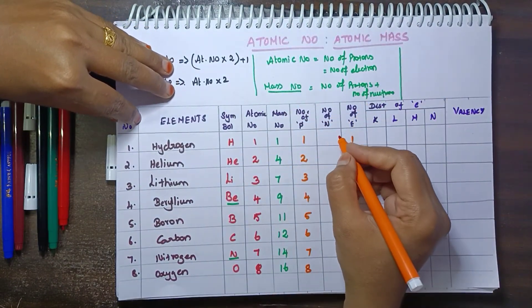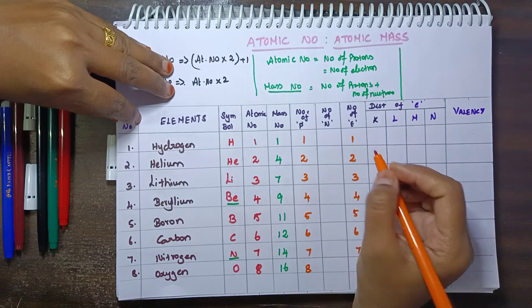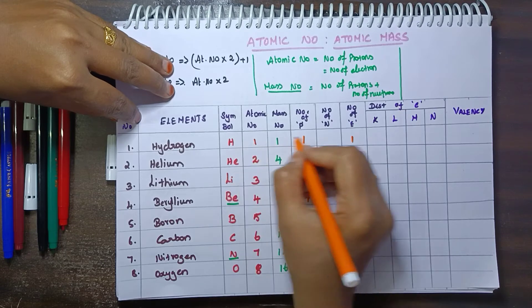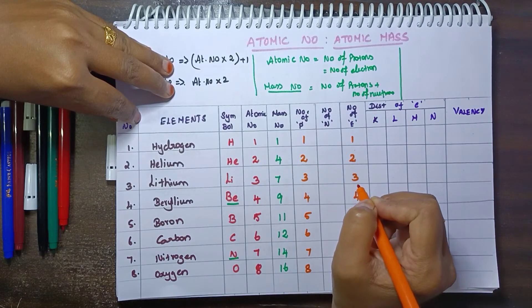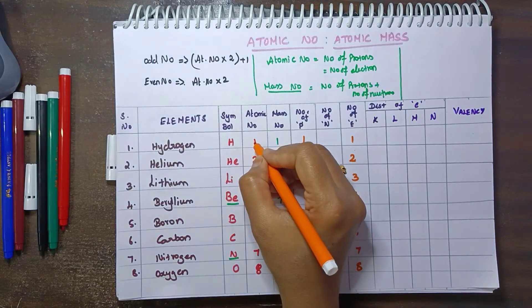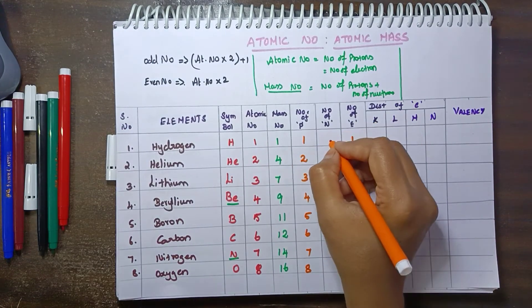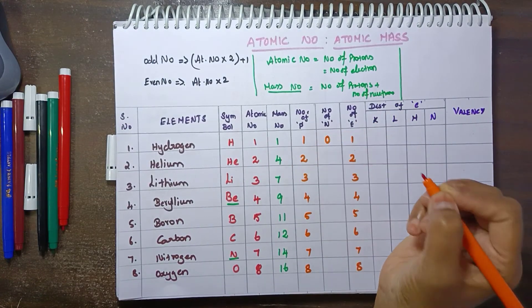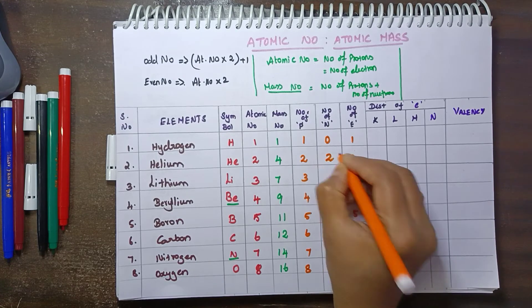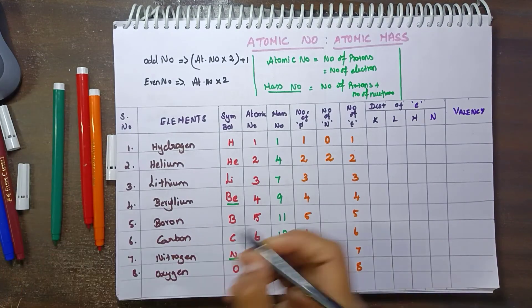In the neutrons, when you calculate it, neutrons equals mass number minus atomic number. That will give you the number of neutrons here. Mass number 1, atomic number 1, so the neutron number is 0. Next, mass number 4, atomic number 2, 4 minus 2 equals 2.